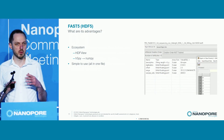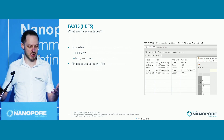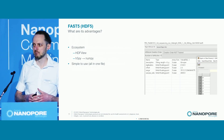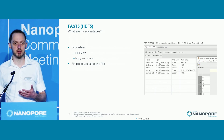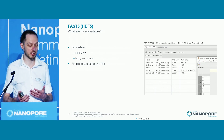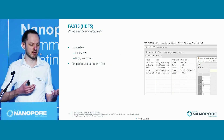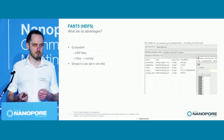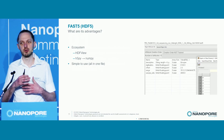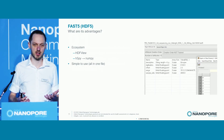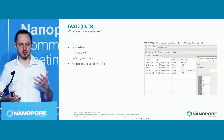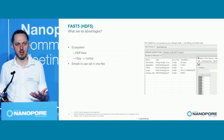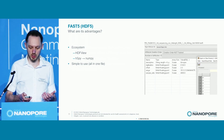Currently, we store signal data in Fast5, which is based on HDF5 — something of an industry standard in scientific computing. This has a few advantages. We can tap into the extensive HDF5 ecosystem; you can open our Fast5 files in HDFView or dig into them with h5py and NumPy. HDF5 is also capable of storing lots of different types of data in the same file, which is convenient for users. If we had to store signal data in one file and read metadata in another, simple things like renaming files would become a lot more complicated.